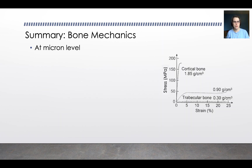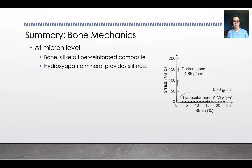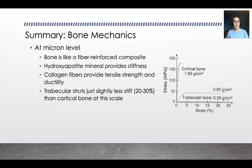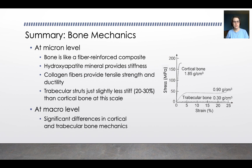At a microscopic level, bone behaves like a fiber-reinforced composite. The hydroxyapatite mineral provides stiffness, while the collagen fibers provide tensile strength and ductility — the ability to store energy in tension. Trabecular struts are just slightly less stiff than cortical bone at the micron scale, but at the macro level there are significant differences in cortical and trabecular bone mechanics. In the next video, we'll talk about how bone remodels in response to loading.